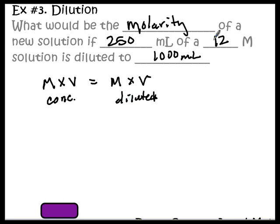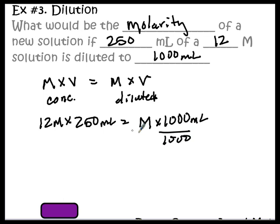I'm just going to plug in my information. For my concentrated one, that's the 12 molar times the volume here, 250 milliliters, and that's going to be equal to the molarity times its new volume which is the 1000 milliliters. So on this side I have the very concentrated small volume and on this side I have the less concentrated big volume. To solve this I'm just going to isolate that M, divide both sides by 1000, and when I do that I find that my new molarity comes out to 3. So I'll have a 3 molar solution in the end.